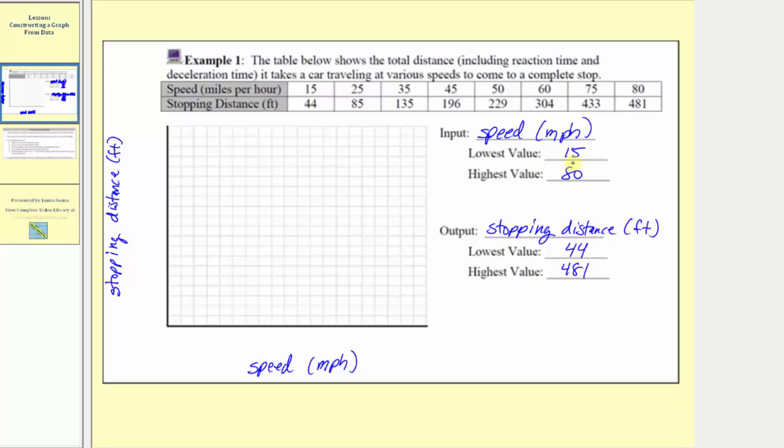Which means the horizontal axis must at least go from 15 to 80, and the vertical axis must go from at least 44 to 481. But we actually want to use more convenient values that will make it easier to form subintervals along the horizontal and vertical axes.